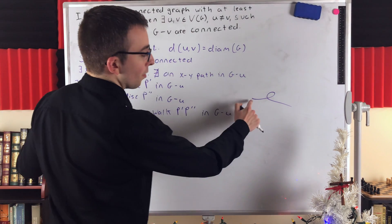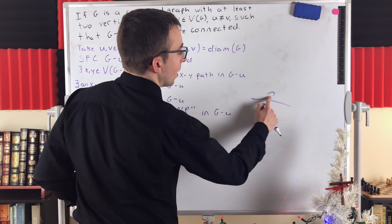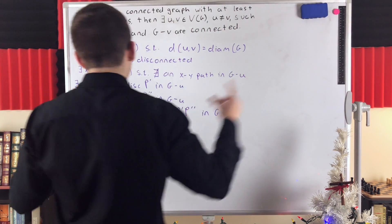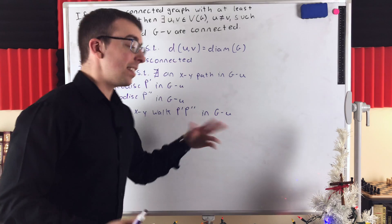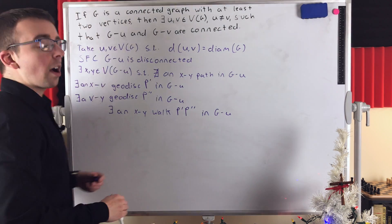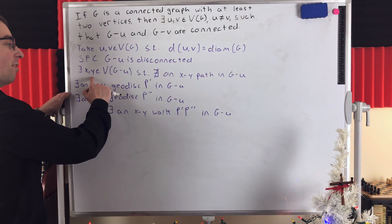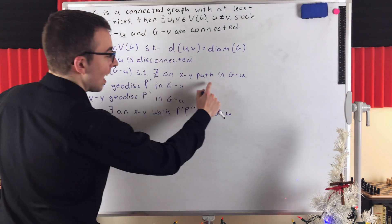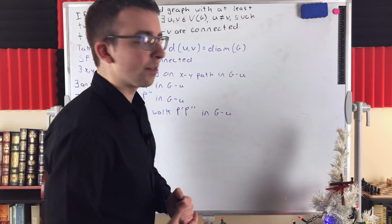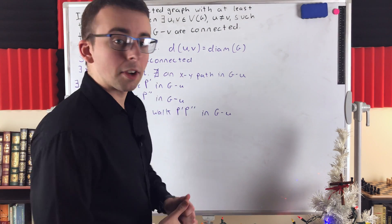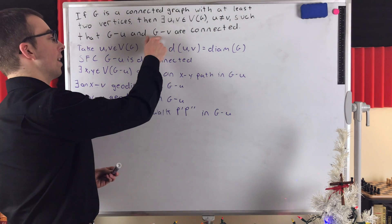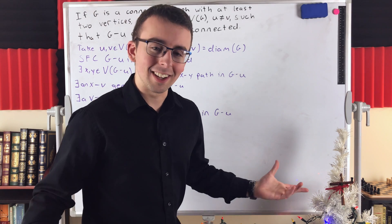If we have a walk that repeats vertices, just remove the detours and you're left with a path. This is the contradiction: we've shown there exists an XY path in G minus U, which contradicts our assumption that no such path existed. Thus, by assuming there was a pair of disconnected vertices in G minus U, we derived a contradiction. Therefore G minus U is in fact connected, and the same argument applies to G minus V. They must both be connected.